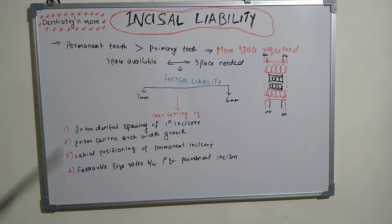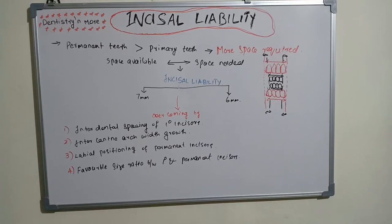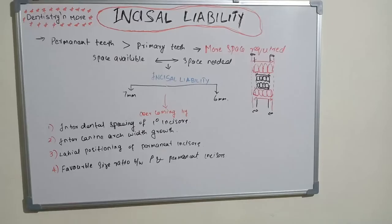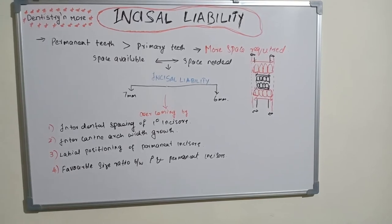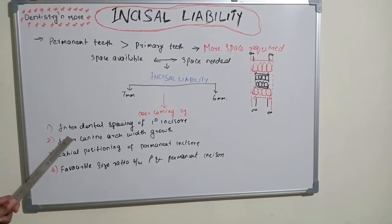The first mechanism is interdental spacing of primary incisors. There is slight interdental spacing present between the primary incisors, and when the larger permanent teeth erupt, they can utilize this existing space to accommodate into that position.